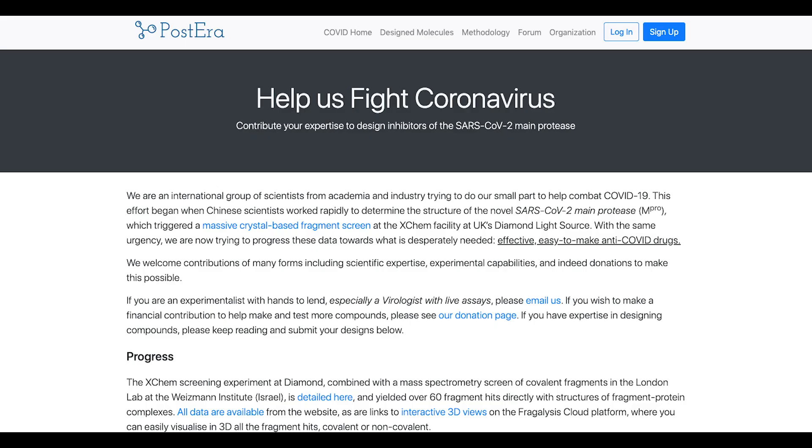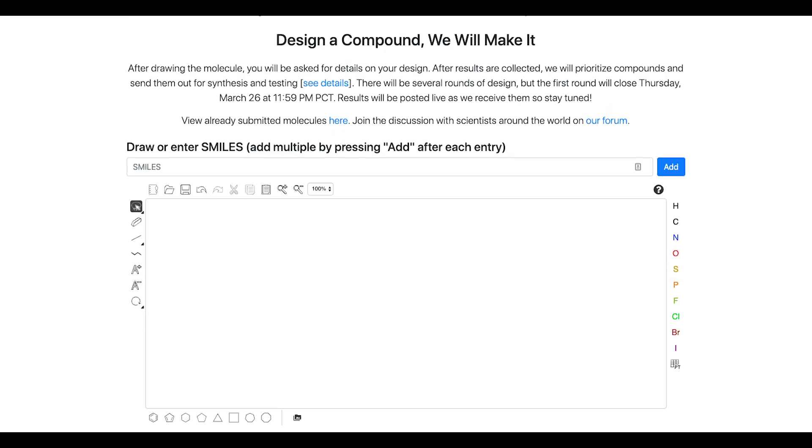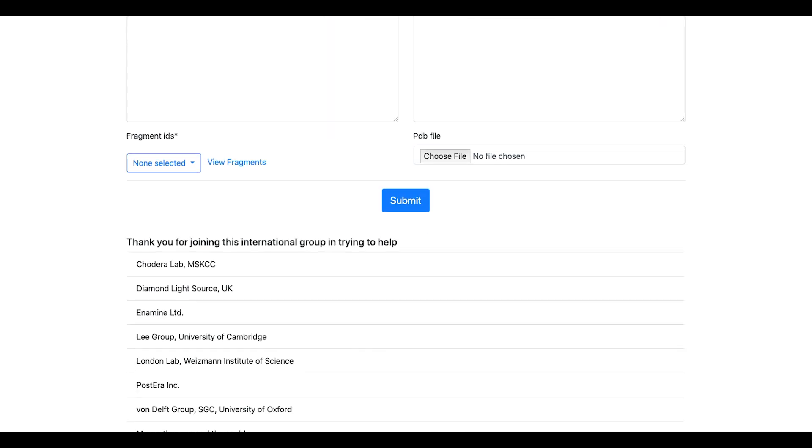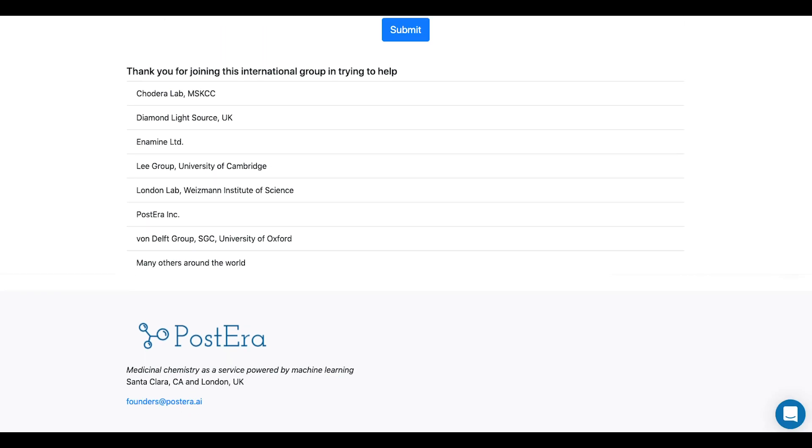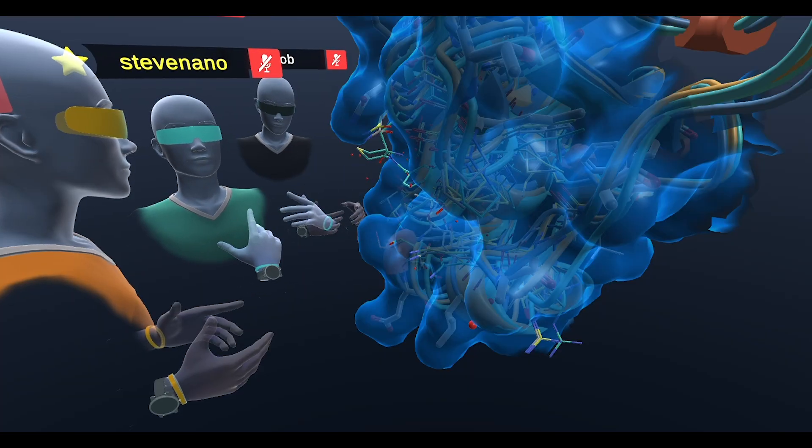So right now there's actually a crowdsource call out to the community for us to design new structures. So John Chodera, PostEra, you know, UK Diamond Light Source group—all these international scientists from around the world have gotten together and they're actually posting all the results from these fragment-based screenings.